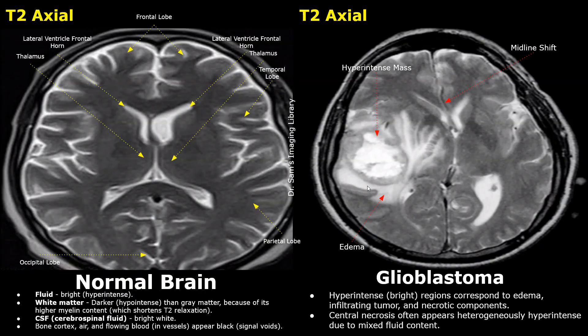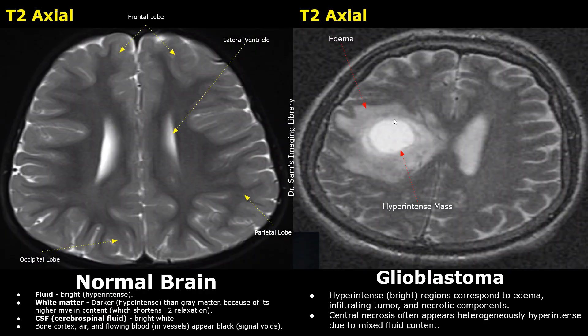This is another T2 image showing a glioblastoma. The mass is hyper-intense and it is surrounded by edematous regions. This is vasogenic edema. Vasogenic edema is the accumulation of fluid and proteins in the brain's extracellular space caused by a breakdown of the blood-brain barrier.